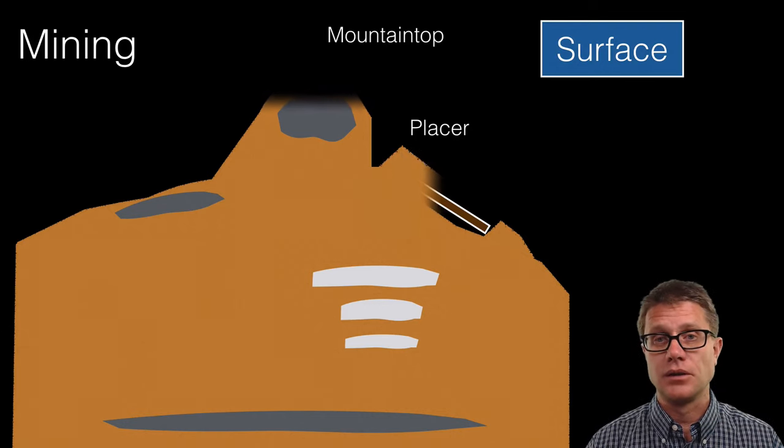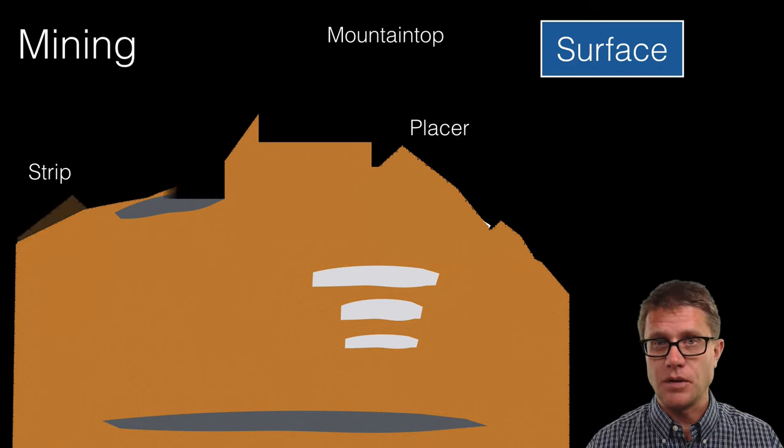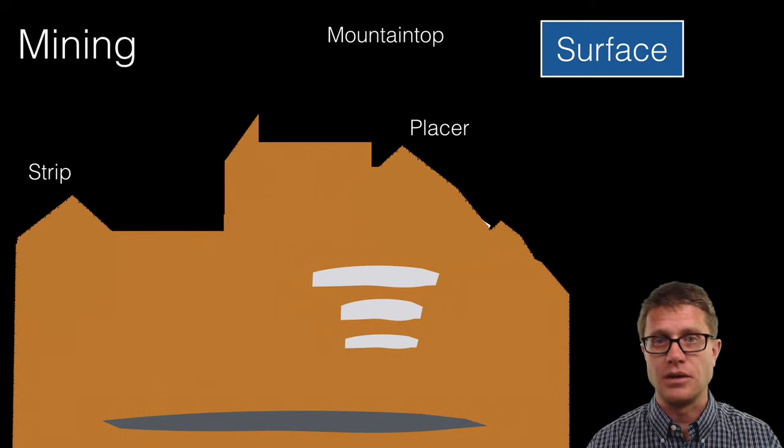We could do mountaintop mining where we literally remove the top of a mountain. We could do strip mining. This is really common with coal. So we are going to build strip after strip after strip. And then we are going to extract that ore. We are left with a lot of these tailings.